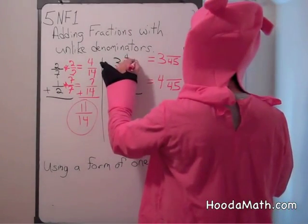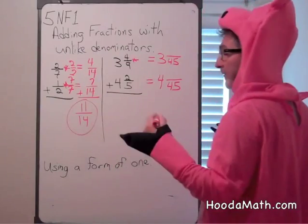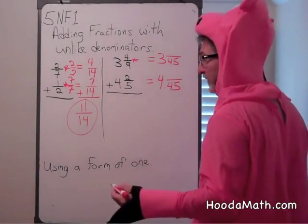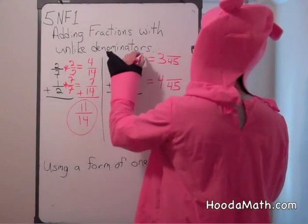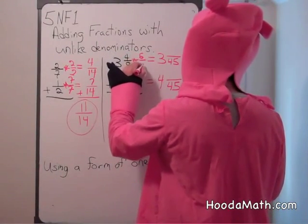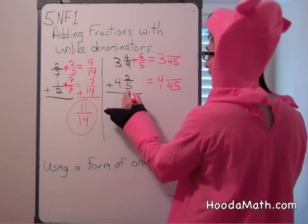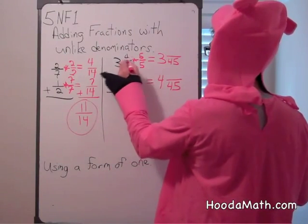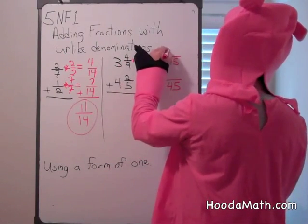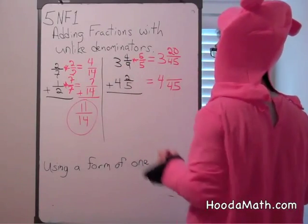What do we multiply 4 ninths by? We have to multiply it by a form of 1, because we don't want to change the value. So we multiply by 5 over 5. The 5 came from here. 5 times 4 is 20. And of course, 9 times 5 is 45.